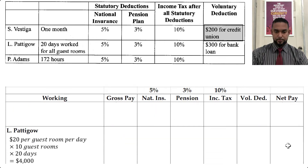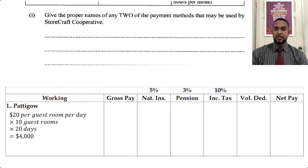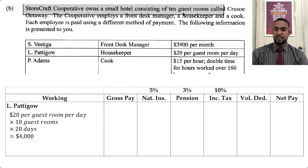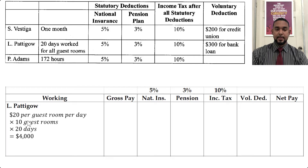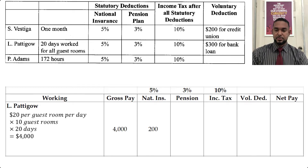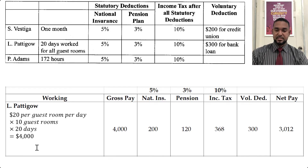For El Patigal: 20 days worked for all guest rooms. We're told Storecraft owns 10 guest rooms, so the calculation is $20 per room per day × 10 rooms × 20 days = $4,000 gross pay. 5% of $4,000 is $200 national insurance. 3% is $120 pension. $200 plus $120 is $320; $4,000 minus $320 is $3,680. 10% of that is $368 income tax. Voluntary deduction is $300. Adding all deductions and subtracting from $4,000 gives net pay of $3,012.